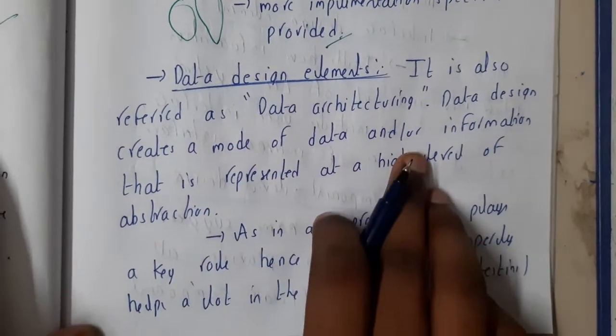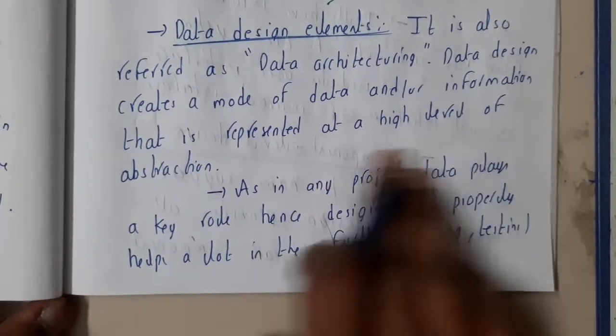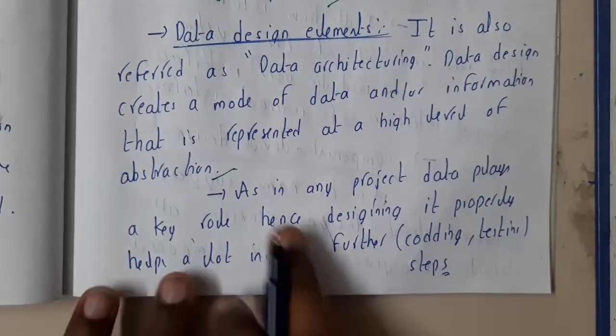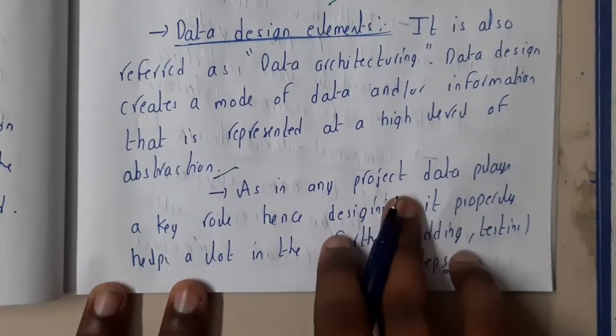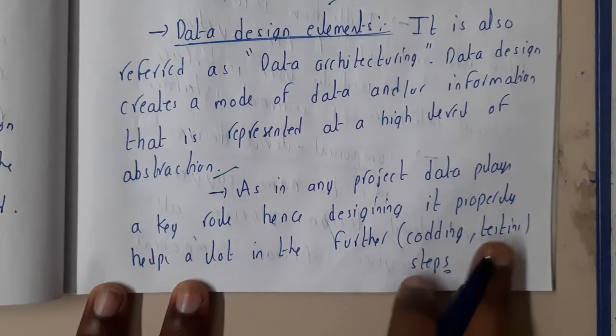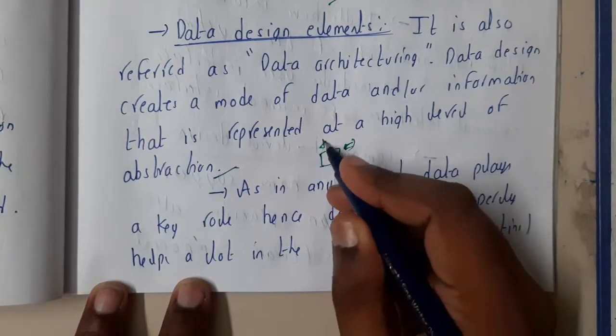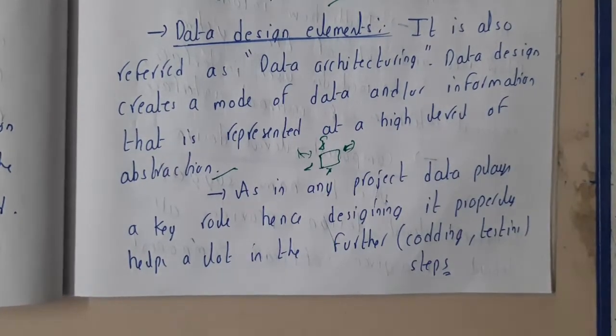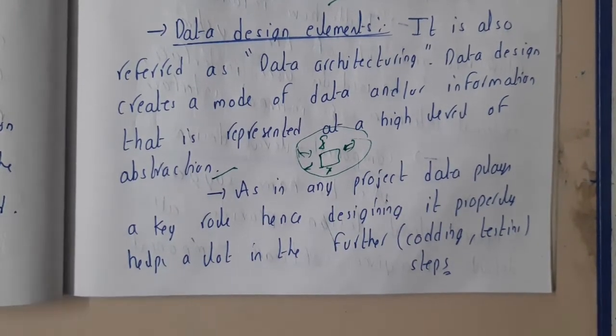We have discussed about this already in our previous lectures. As in any project, data plays a key role, hence designing it properly helps a lot in future coding and testing. In the center we will be having the data, and based on the requirements we will be designing these kinds of models. We are having hybrid process models and many things we will be discussing in our next unit.